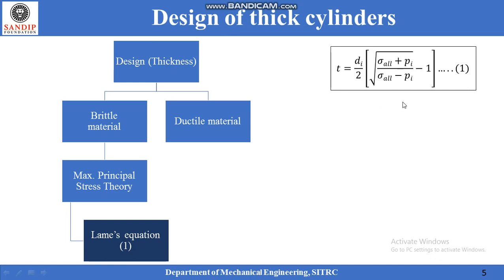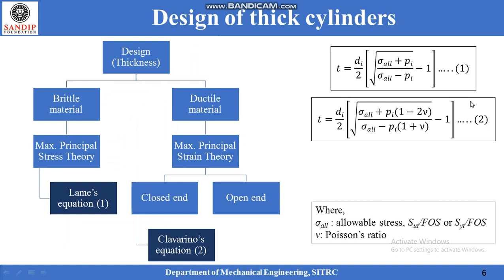Lame's equation is: T = (Di / 2) × [√((σ_allowable + pi) / (σ_allowable − pi)) − 1], where the minus 1 term exists outside the radical sign.